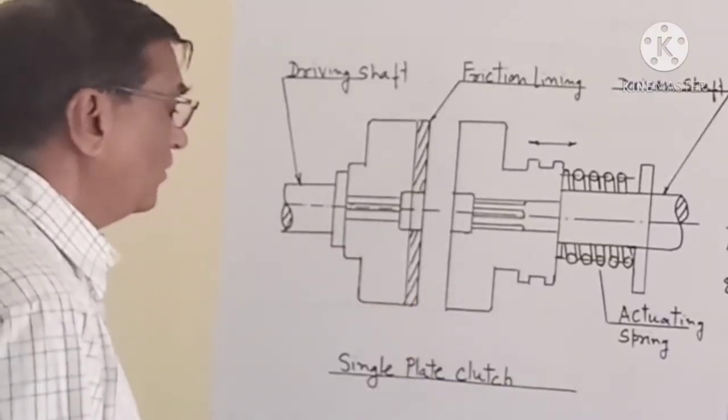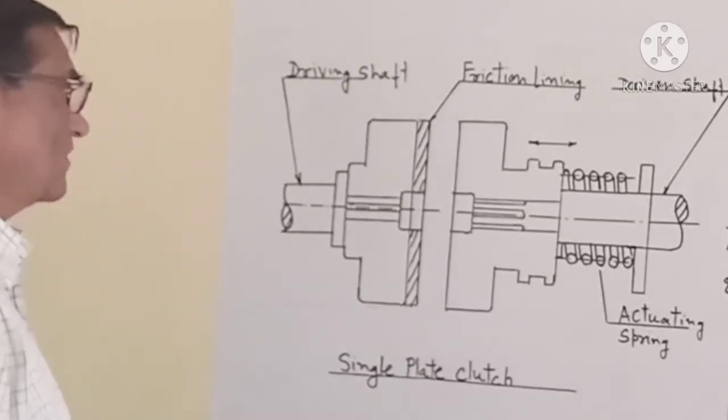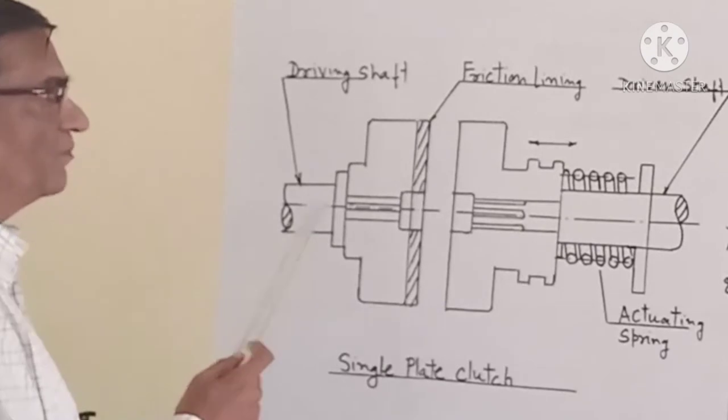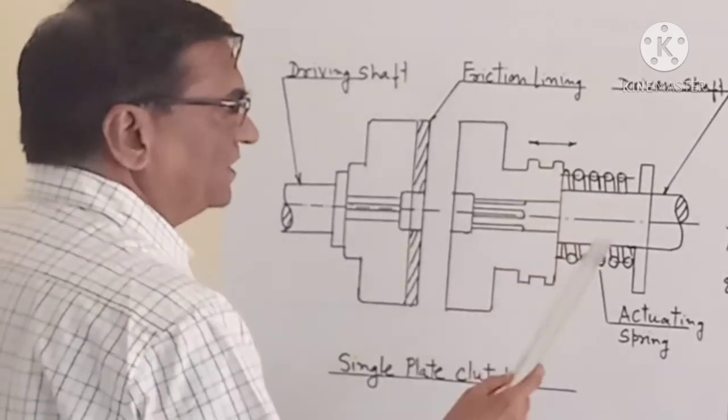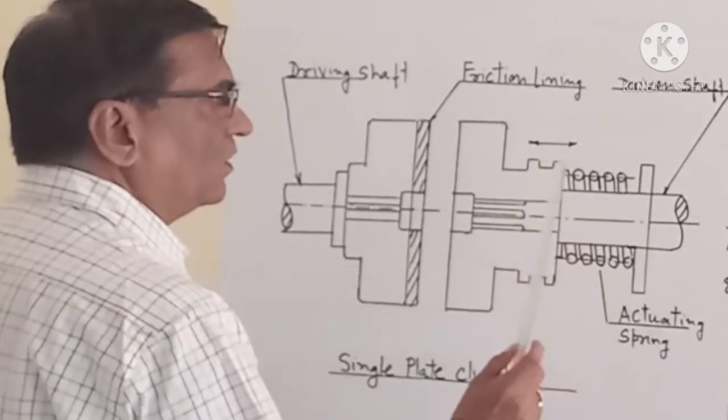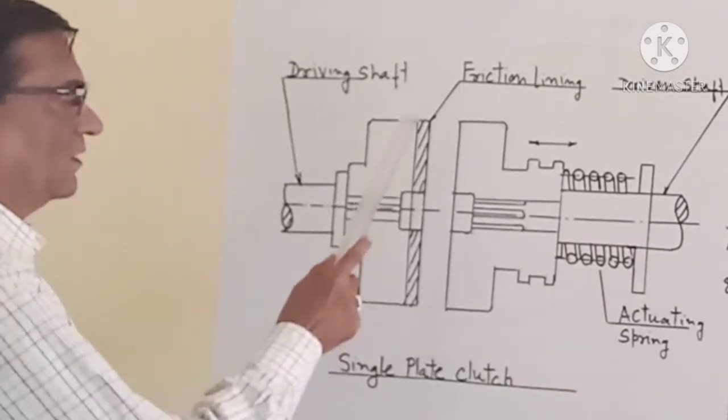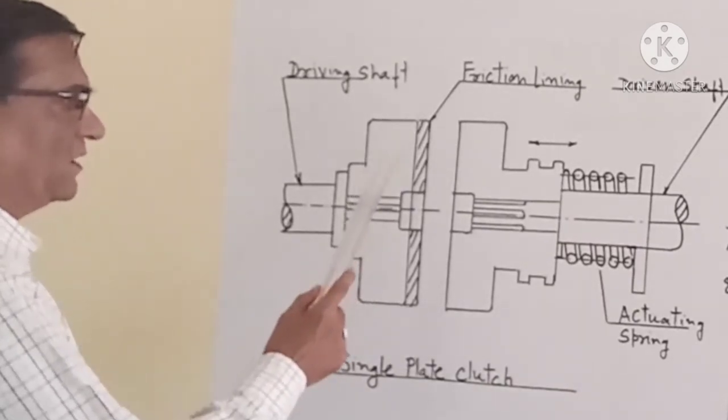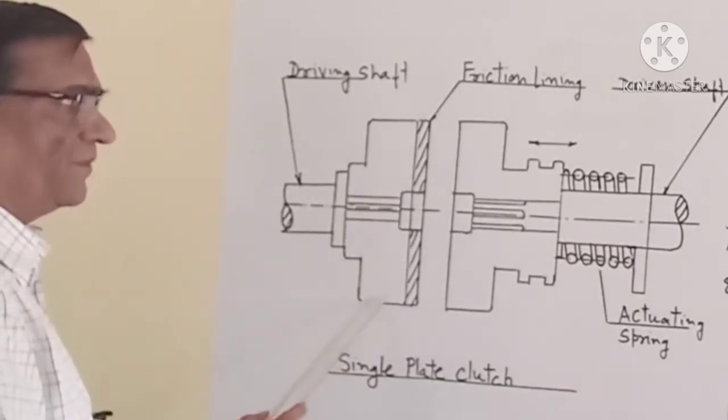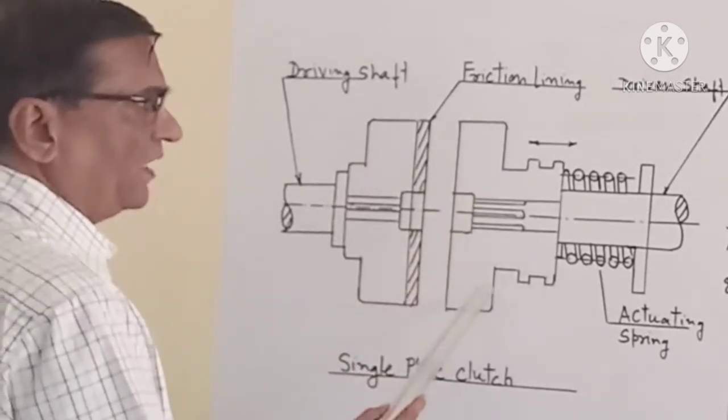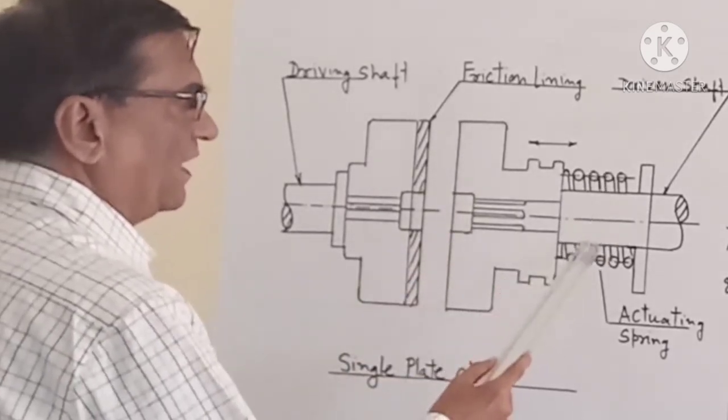This is the figure of single plate clutch. This is the driving shaft attached to the prime mover, and this is the driven shaft attached to the machine or wheel. On this, a disc is mounted. This is the fixed disc, and another disc is mounted on the driven shaft.